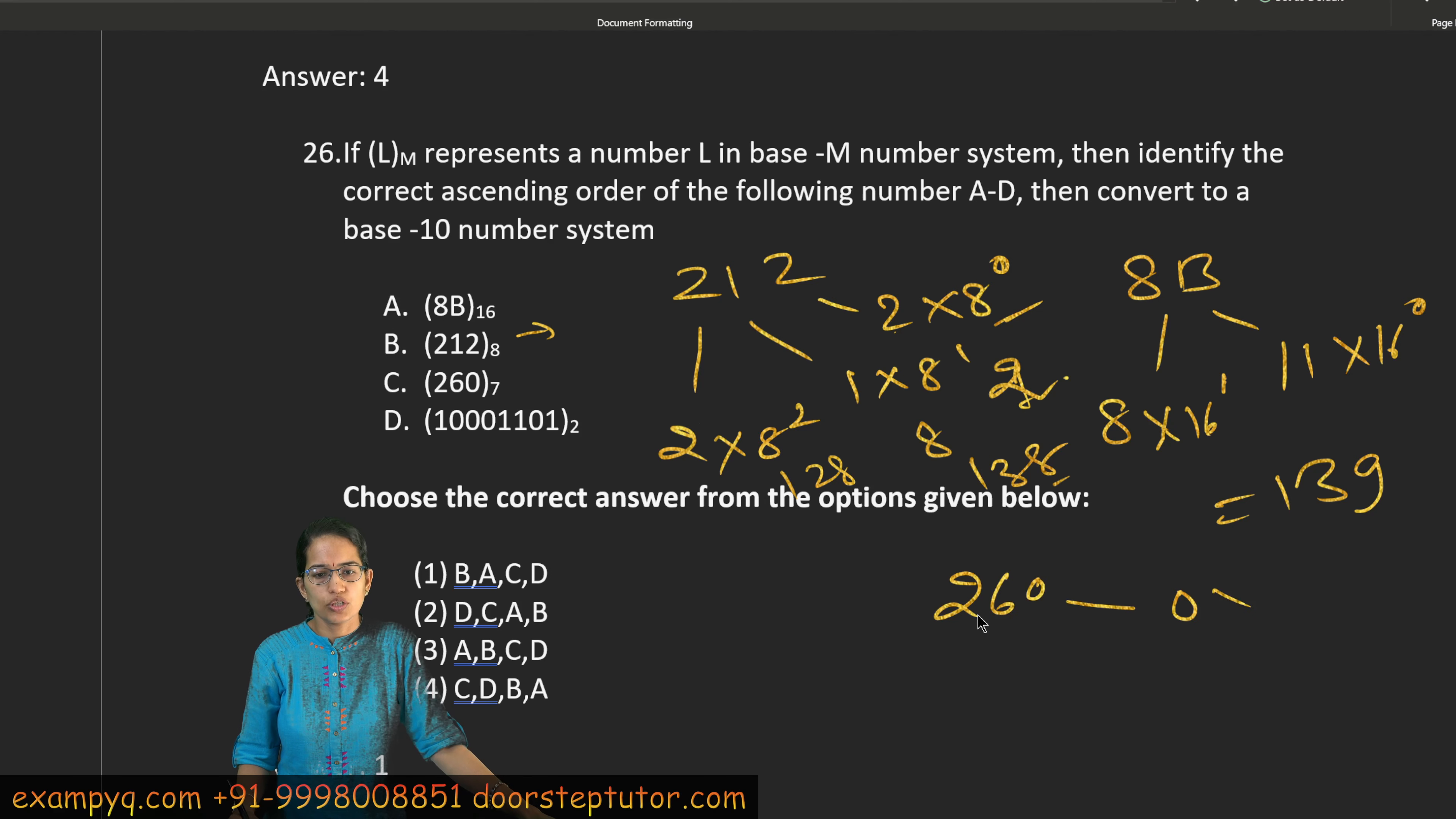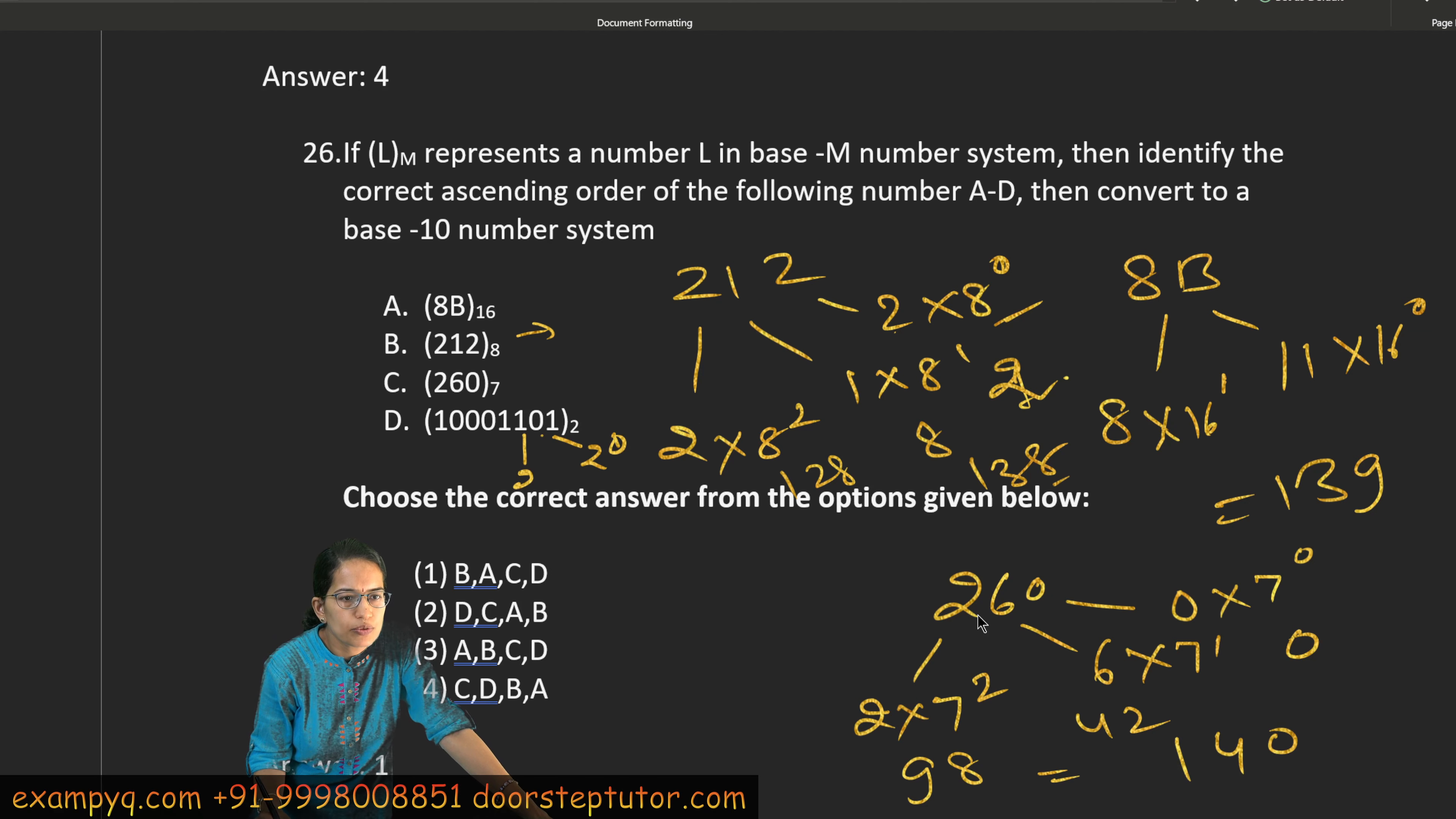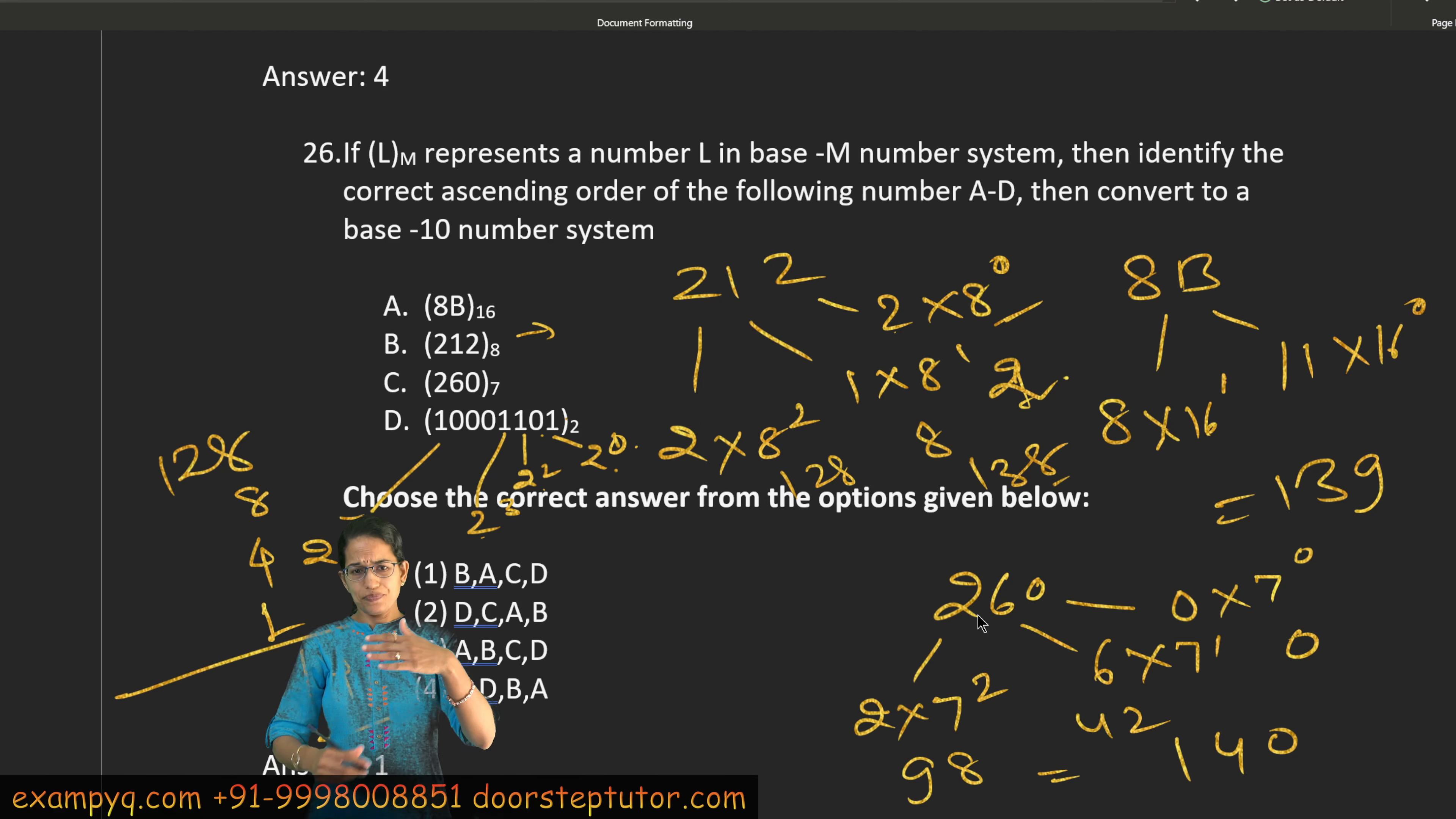In this case, 267 is on base 7. 0 into 7 raised to 0, 6 into 7 raised to 1, and 2 into 7 raised to 2. When we solve this, then our values come. 49 into 2 is 98, plus 42, plus 0. So this is 140. Last question. This is binary. 2 raised to 7 is 128, 2 raised to 3 is 8, 2 raised to 2 is 4, and 2 raised to 0 is 1. When we add them, it comes to 141.